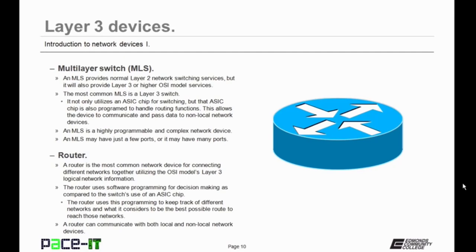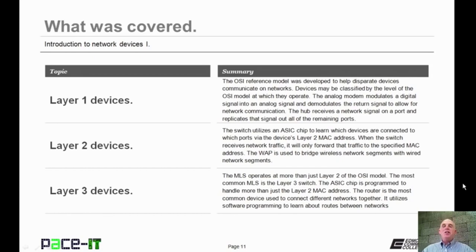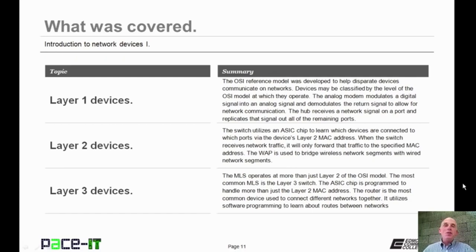That's what makes a router a Layer 3 device. The router uses software programming for decision making, as compared to the switch's use of an ASIC chip. The router uses this programming to keep track of different networks and what it considers to be the best possible route to reach those networks. A router can communicate with both local and non-local network devices. In most cases, a router will have fewer ports than a switch. That concludes this session on the introduction to network devices Part 1.